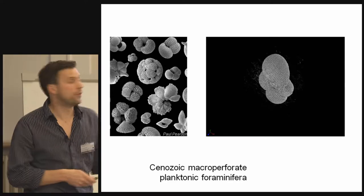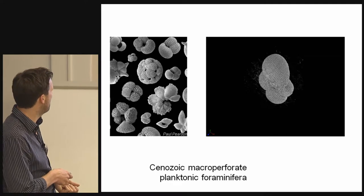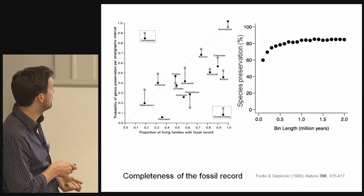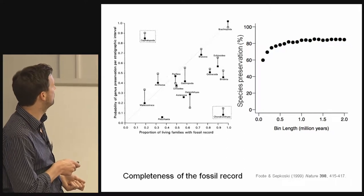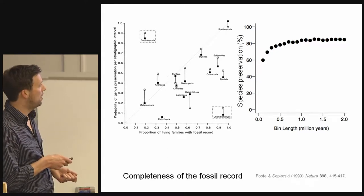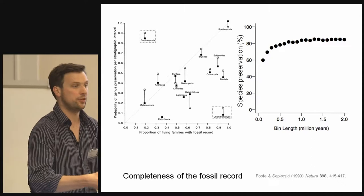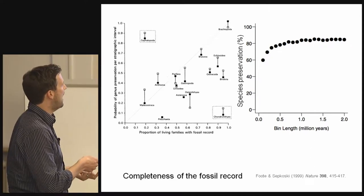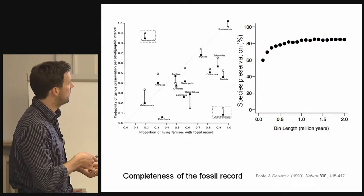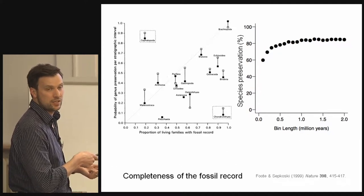This is an example of how complete the fossil record is — this is Furt and Sapkowski's figure. The proportion of living families with a fossil record, and more interestingly, the probability that we find a species in a given bit of rock. Brachiopods have a great fossil record, up there about 90% — but this is genera. Whereas for planktonic foraminifera this is species, a higher level of resolution, getting towards the fundamental unit of diversification. Regardless of how we split up time, with average bin length here of about 11 million years versus 100,000 years, we find a 60% chance of detecting a species throughout its history — this is a capture-mark-recapture rate.